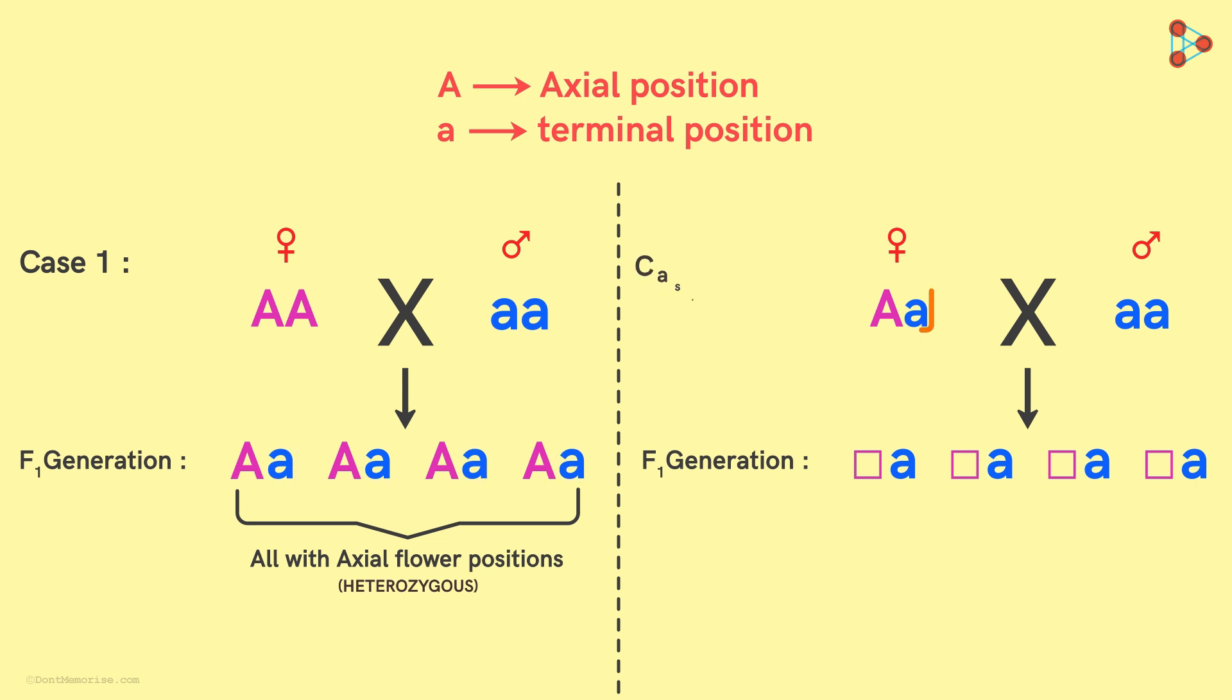Now we move on to case 2! Look at the plants obtained in the F1 generation! We get two axial and two terminal! They are in the ratio 1 to 1! So what can we deduce from these two cases?